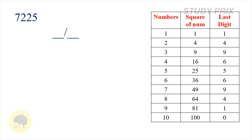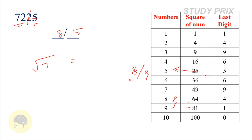Now we know the tricks, so let's solve the next question more quickly. The number is 7225. Consider the last digit 5 — the corresponding number is 5, so the last digit must be 5. Ignore the last two digits and take the first two digits, 72. It lies between 64 and 81, corresponding to 8 or 9. Take the least number 8. Therefore the square root of 7225 is 85.